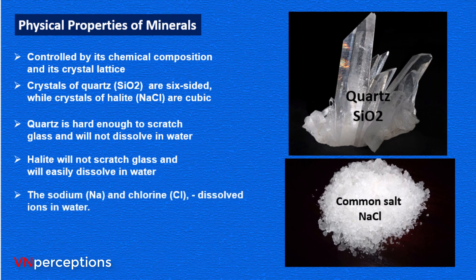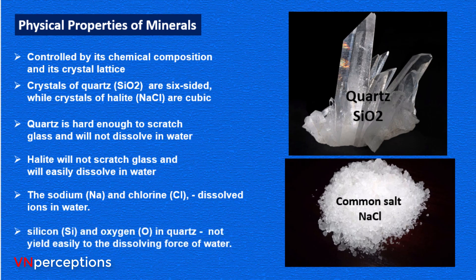The sodium and chlorine in halite, by their chemical nature, readily break their bonds and become dissolved ions in water, whereas silicon and oxygen in quartz are linked by strong bonds and don't dissolve in water. Each mineral exhibits a unique set of physical properties, so the main task in identifying a mineral is to determine its physical properties.